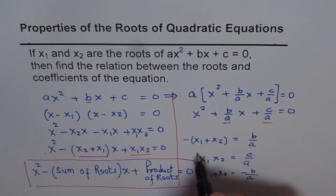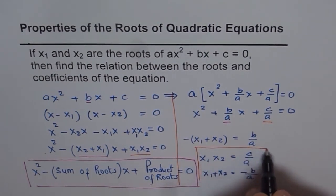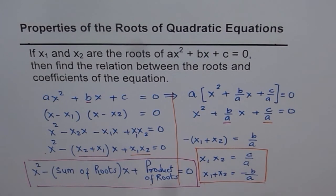So we will highlight that portion as product of roots is c by a and sum of roots is minus b by a. So that is how roots and coefficients for a quadratic equation are related.